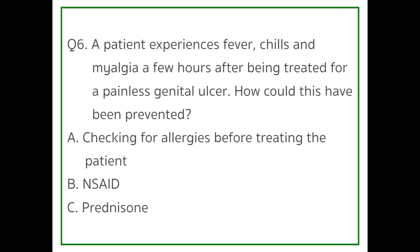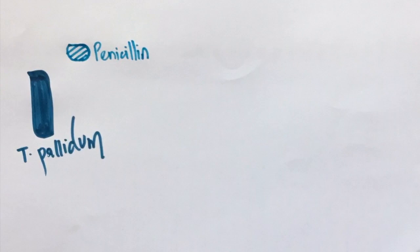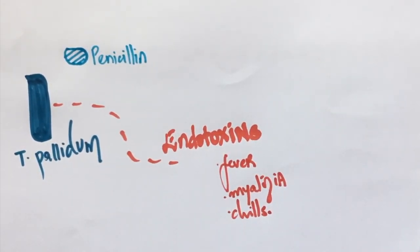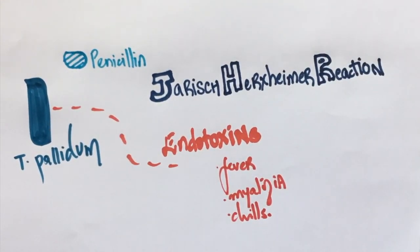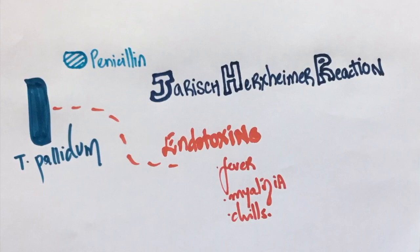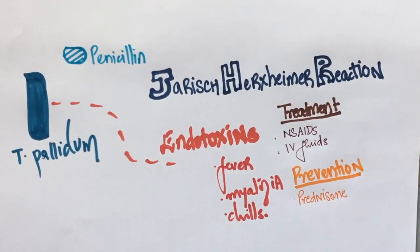Question number 6: A patient experiences fever, chills, and myalgia a few hours after being treated for a painless genital ulcer. How could this have been prevented? Option A: Checking for allergies before treating the patient. Option B: NSAIDs. Option C: Prednisone. The answer is prednisone. This patient was likely treated for syphilis. When penicillin is given, it breaks the bacteria down; due to rapid lysis of the bacteria, endotoxins are released, causing symptoms of fever and myalgia. This is known as the Jarisch-Herxheimer reaction. It takes place regardless of allergies — allergic reactions are likely to occur sooner, not hours later. This condition is managed with NSAIDs and IV fluids, and it can be prevented by providing prednisone.